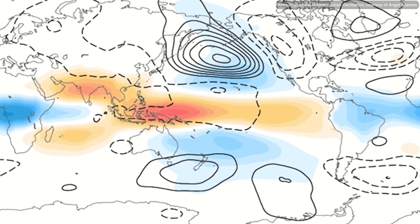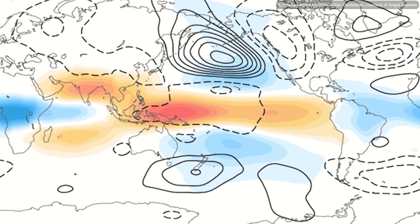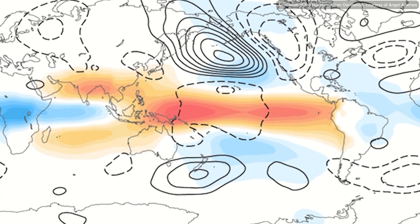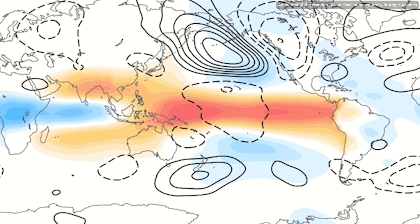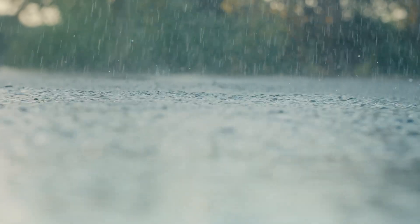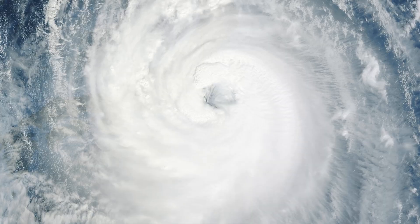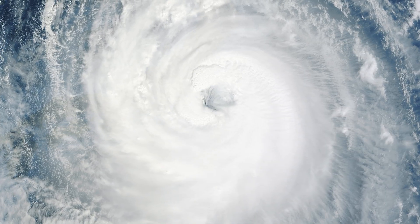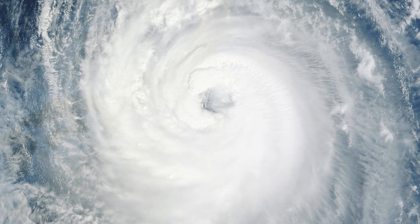It moves from the Indian Ocean into the western Pacific. While it moves, it actually creates a lot of rainfall, it produces hurricanes — it is massive.